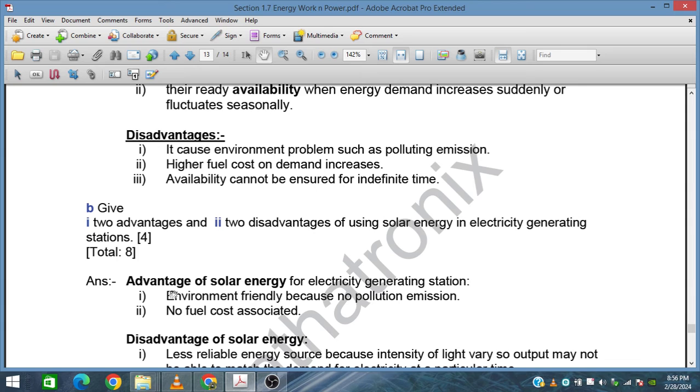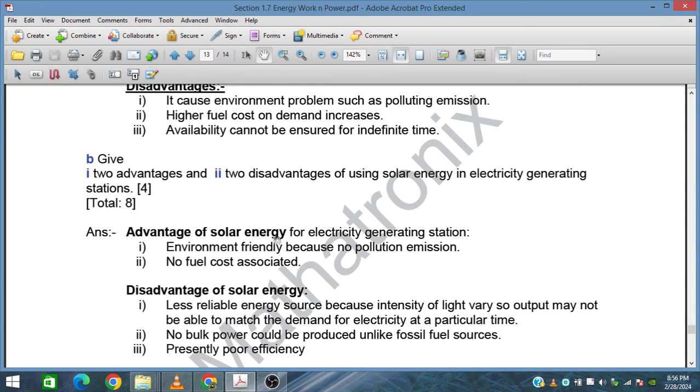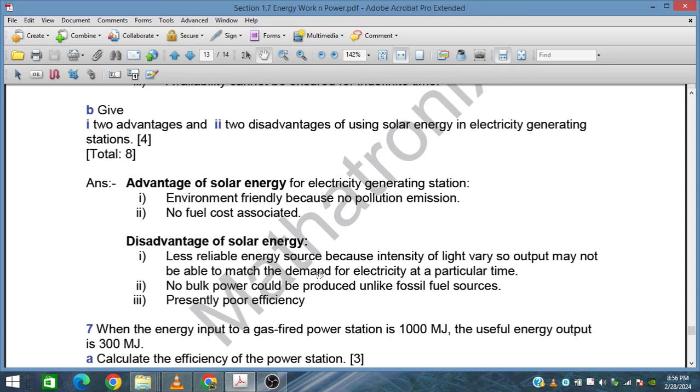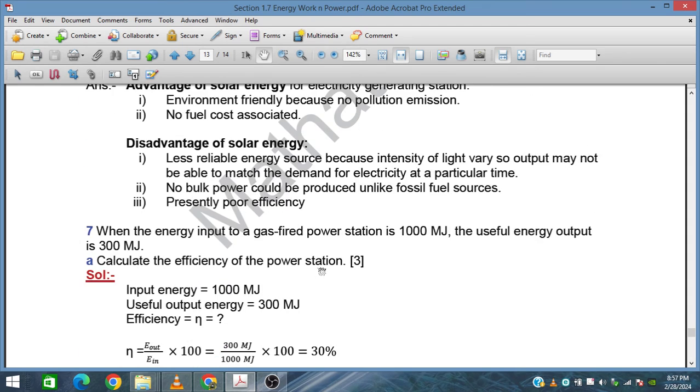Give two advantages and two disadvantages of using solar energy in electricity generating stations. Advantages: environmentally friendly, no fuel costs associated. Disadvantages: less reliable energy source, no bulk power can be produced, and presently poor efficiency. Solar energy has low efficiency, which is one of the disadvantages.